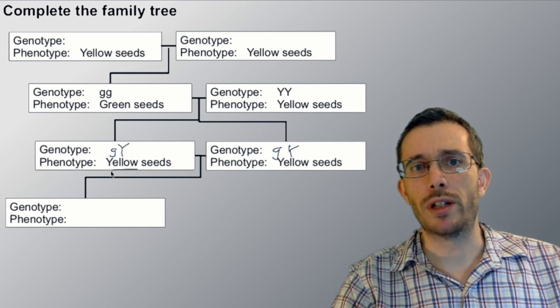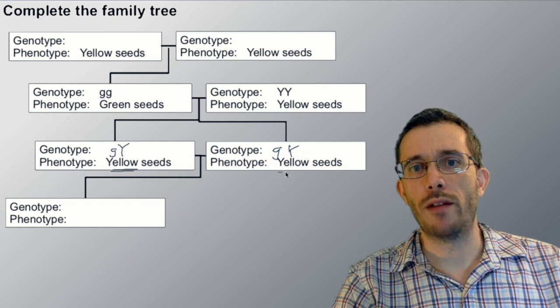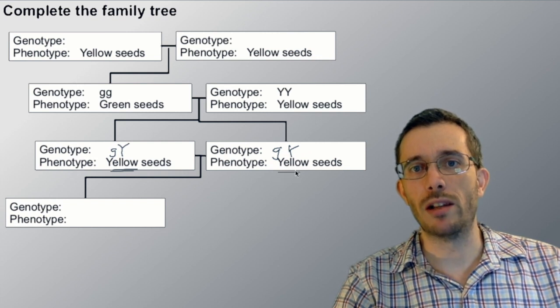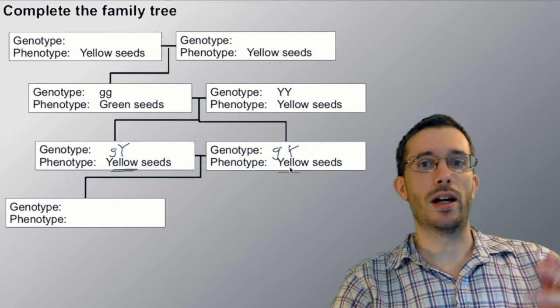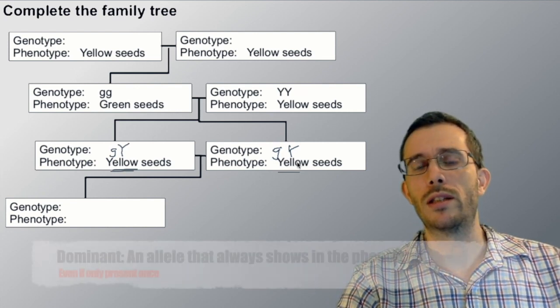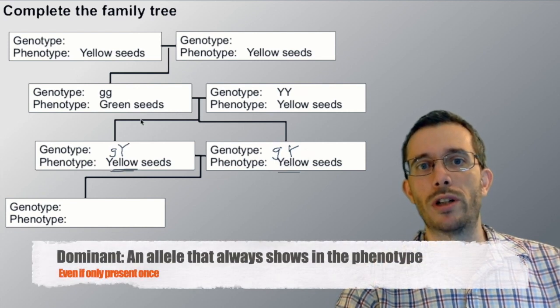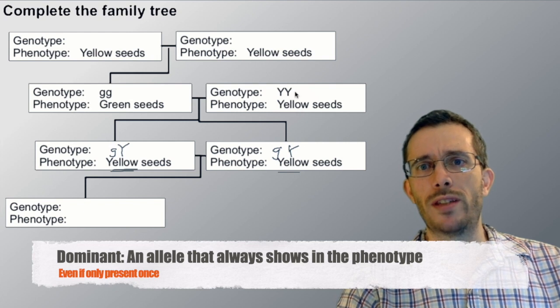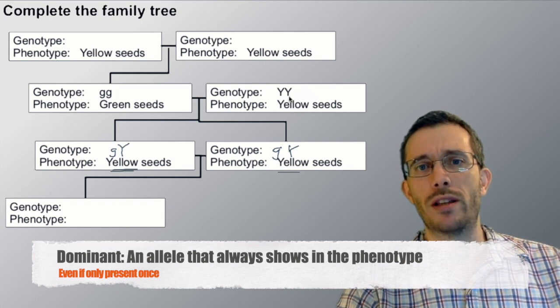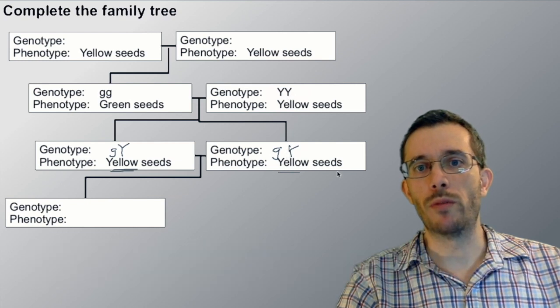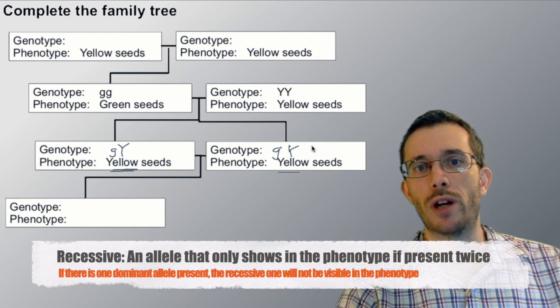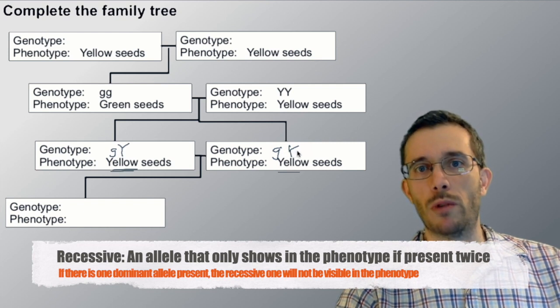Now we see however that both of them have the phenotype that's yellow, which tells us that the yellow allele is the dominant one over the green one. We could have seen this also from convention that this one was written in capital letters, but it's safer to go from what we're actually observing, so we're absolutely sure now the yellow one is the dominant one.